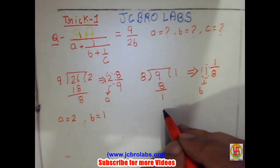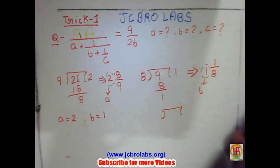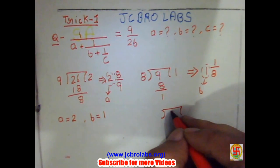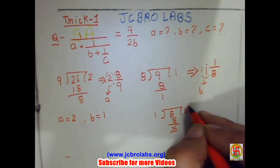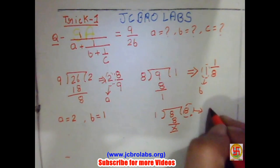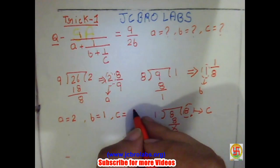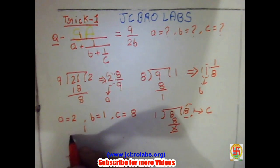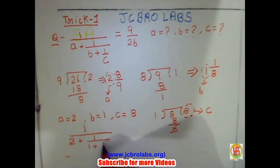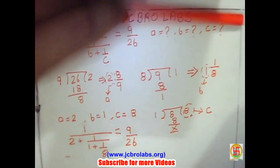Now we are left with 8 and 1. We take this 8 inside and 1 outside. 1 times 8 is 8, and we are left with nothing. So this value is the last one, that is the value of c. So c equals 8. Our answer is 1/2 + 1/1 + 1/8 = 9/26, and you can verify it by taking a reverse approach.